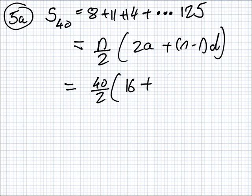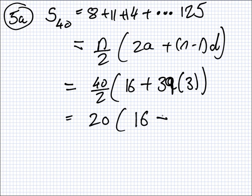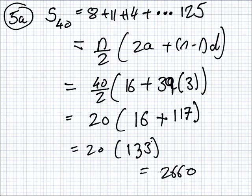So 2A? What was 16? N minus one? 39. And the D, 39, is 3. So that's 20 times 16 plus 117 or something. So that's 20 times 100 and something. So that's 2660, I think, I hope. If you have a calculator, it's much easier. You want to confirm it. Is this okay for you?